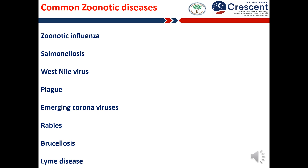Plague is a disease that affects humans and other mammalian species. It is caused by the bacterium Yersinia pestis. Humans usually get plague after being bitten by a rodent carrying the plague bacterium, or by handling an animal infected with plague.